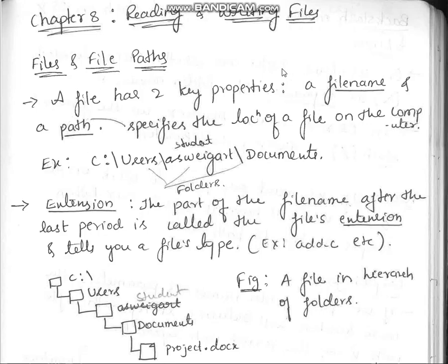In this module we are going to discuss the chapter 'Files and File Paths.' A file has two key properties: a file name and a path. The file name is the name we give to the document, and the path specifies the location of the file on the computer — where that file is actually stored.